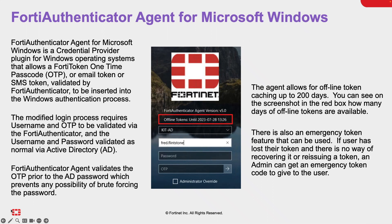FortiAuthenticator agent for Microsoft Windows is a credential provider plugin for Windows operating systems that allows a FortiToken one-time passcode, email token, or SMS token validated by FortiAuthenticator to be inserted into the Windows authentication process. The modified login process requires a username and one-time password to be validated by FortiAuthenticator, and the username and password validated as normal by Active Directory.